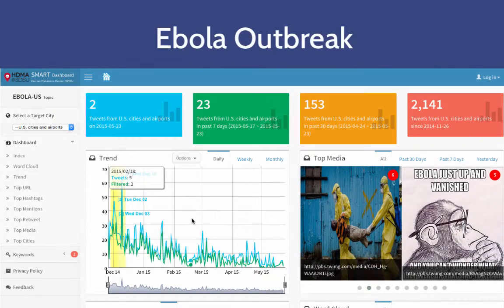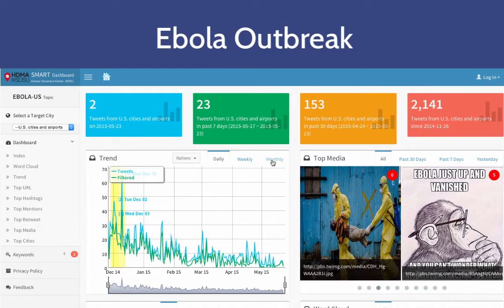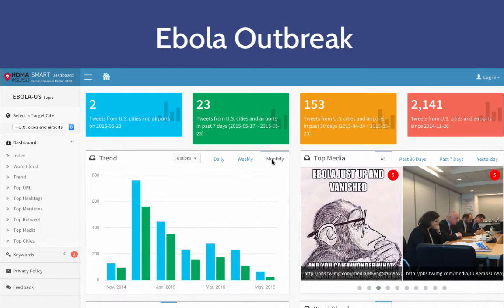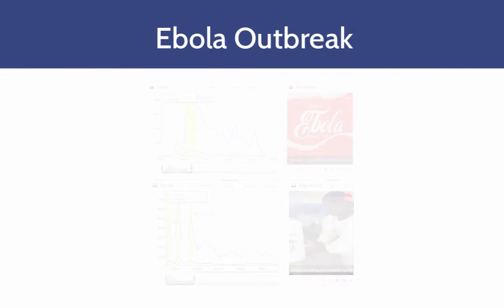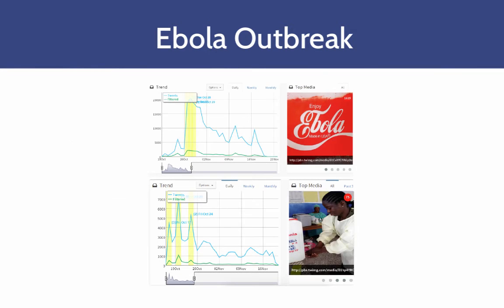Another potential use is to monitor public opinion towards crisis events such as the Ebola outbreak. Shown here are some of the most popular media shared on Twitter between three U.S. cities — New York, Dallas, Cleveland — and 12 West African cities. The temporal trends of Ebola-related tweets in U.S. cities are very different from those in West African cities.